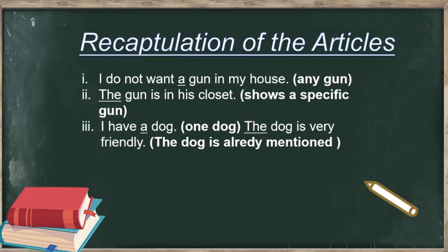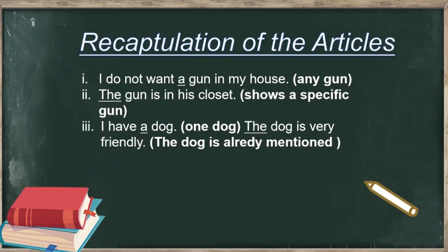Let's revise the articles quickly. 'I do not want a gun in my house' — we use 'a' before gun because we are talking about a gun in general, and 'g' is a consonant with a consonant sound. 'The gun is in his closet' — this time we use 'the' because we are showing a specific gun. 'I have a dog' — talking about the dog in general, so we use 'a.' 'The dog is very friendly' — we have already introduced the dog, so now we use 'the' before it.